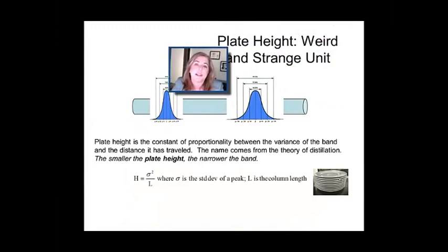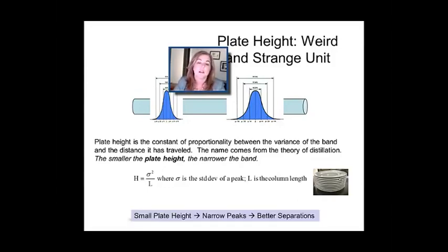It's a really weird and strange unit. But one of the first definitions I'm going to give you is it's equal to the variance of a peak divided by the column length. And it's very important that you express that variance when you measure it in terms of the same units. So ideally, sigma squared would be expressed in terms of length, and you're going to get that from a chromatographic separation. Remember, if you've measured it in time, you can convert it to length if you know the flow rate. So just keep that in mind when you do these calculations. So just to reiterate, small plate height, if h is tiny, has units of distance, we're going to have narrow peaks and better separations.